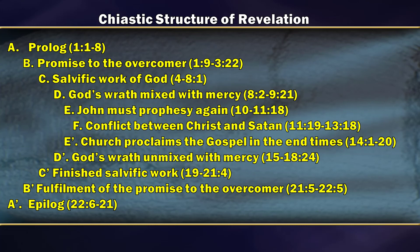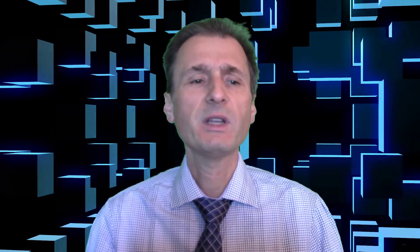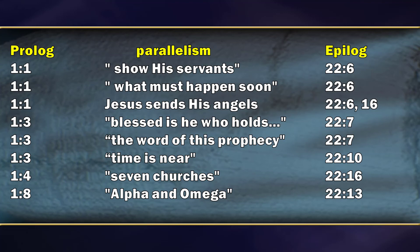John must prophesy again, as told to him in Revelation chapter 10. In E prime, the church proclaims the gospel at the end of time — reflecting the preaching of the gospel, first by John and then by the church. The very central point, F, is the central theme of the entire book of Revelation: the conflict between Christ and Satan as it plays out through the centuries. The book tells us how this conflict works out in the lives of believers and the church, symbolically represented as the seven churches of Revelation. There is also a clear parallelism between the prologue and epilogue — shared phrases include: 'show his servants,' 'what must happen soon,' 'Jesus sends his angels,' 'blessed is he who holds the words of this prophecy,' 'the time is near,' and the title 'Alpha and Omega, the beginning and the end.'